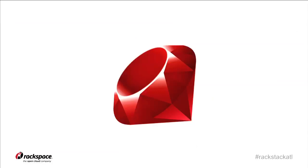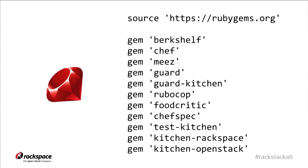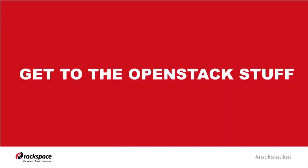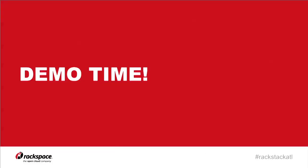The cool thing about all these tools is they're all Ruby, which means you can include them in a Ruby Gemfile in your working directory, run bundle install, and they'll all download. At the bottom of the Gemfile are the OpenStack-relevant pieces: Test Kitchen along with two plugins — kitchen-rackspace and kitchen-openstack. I'll be using kitchen-rackspace today since I have access to a public cloud.